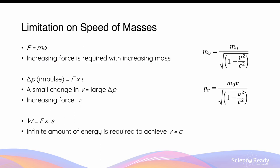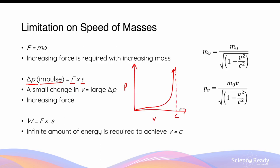You can also understand this limitation on the speed of the object by using momentum and impulse. The change in momentum — also known as impulse — is equal to the product of the force multiplied by the time over which the force is applied. When the object approaches the speed of light, a small change in its velocity will result in a very large change in momentum, delta p. A large change in momentum will then require an increasing amount of force, and it will eventually require an infinite amount of force for the object to achieve the speed of light.